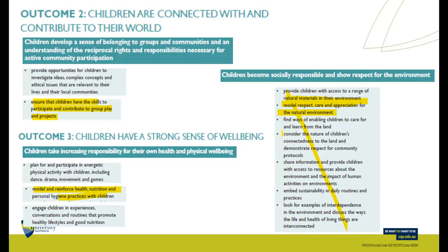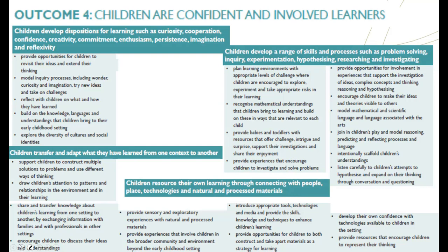Under outcome two, this particular elaboration shows a lot of what science does: sustainability, natural materials, respect and care for the environment. Embedded in these units: caring for the land, connectedness to the land, sharing and distributing information, communicating information, and embedding sustainability in daily routines and practices — all of these things are very much science.